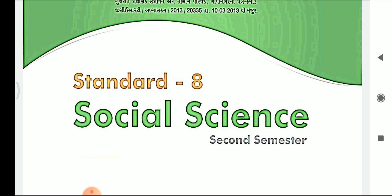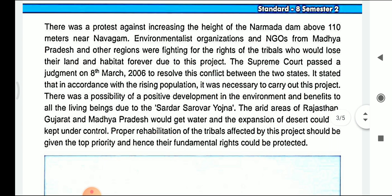My dear students, during the previous lecture we started unit number 4, that is the Supreme Court. We saw the working of the Supreme Court and the introduction part of the chapter. We studied about public interest litigation — how, if the public is affected, a person or any particular group of persons can complain in the Supreme Court in the interest of the public. Such litigation filed in the Supreme Court is considered as public interest litigation.